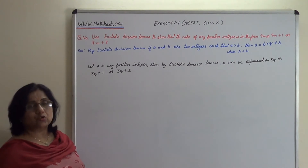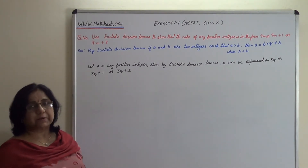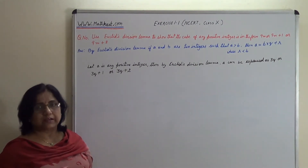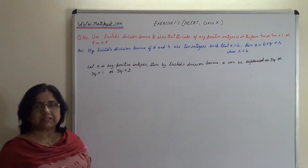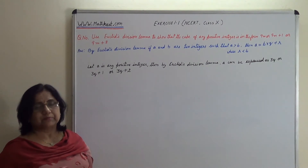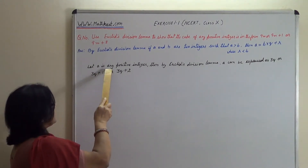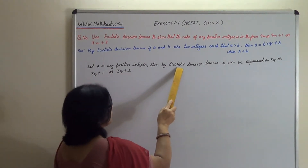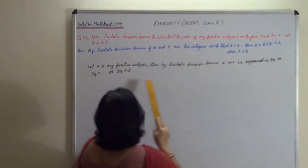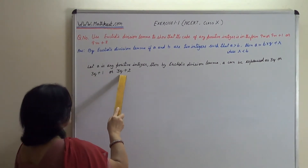We have taken a as a positive integer. If we divide it by 3, then either the number will be completely divisible by 3, giving remainder 0, or the remainder will be 1 or 2 — because when dividing by 3, the remainder cannot be 3 or greater. So let a be any positive integer; then by Euclid's division lemma, a can be expressed as 3q, or 3q plus 1, or 3q plus 2.